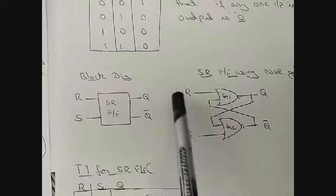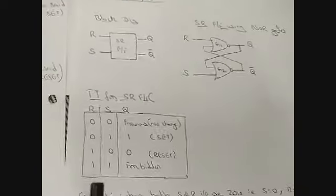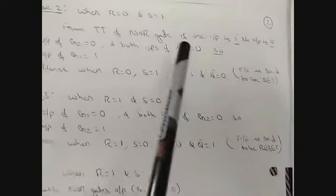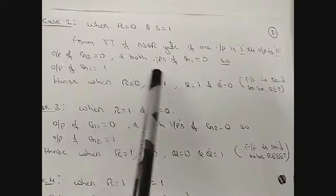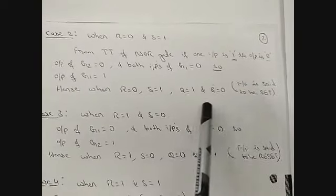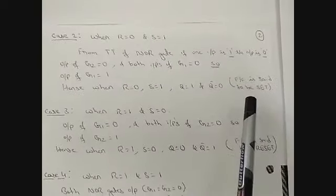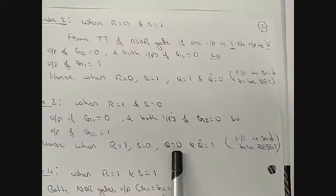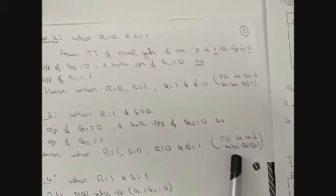Case three: when R=1 and S=0. Since R=1, one input to G1 is one, so the output is zero, giving Q=0. Then at G2, inputs are S=0 and Q=0 — both zero, so Q-bar=1. Therefore, when R=1 and S=0, Q=0: the flip-flop is reset.